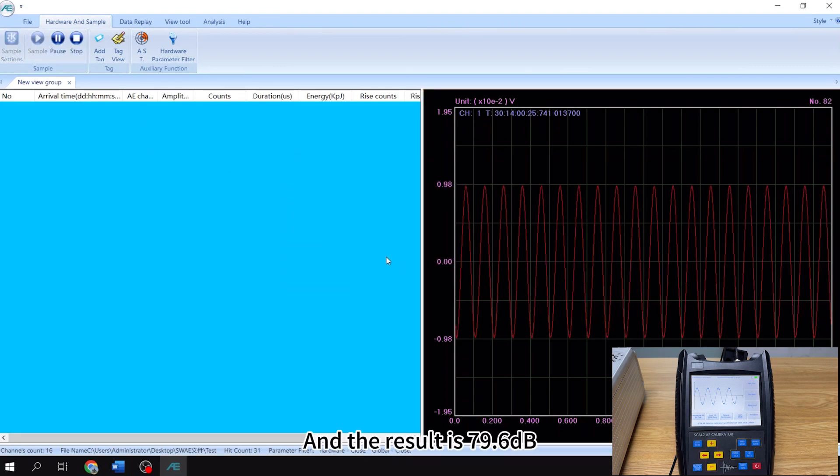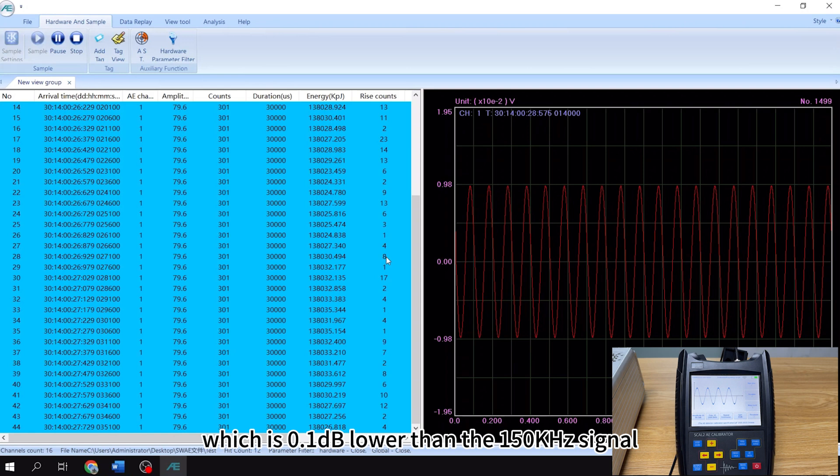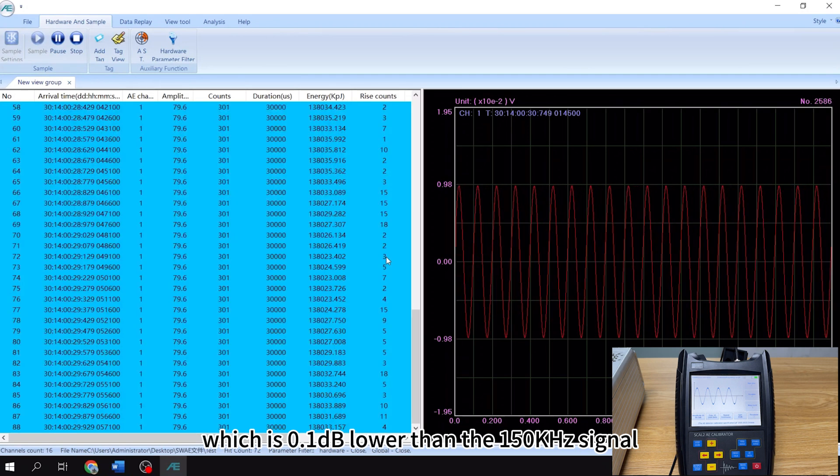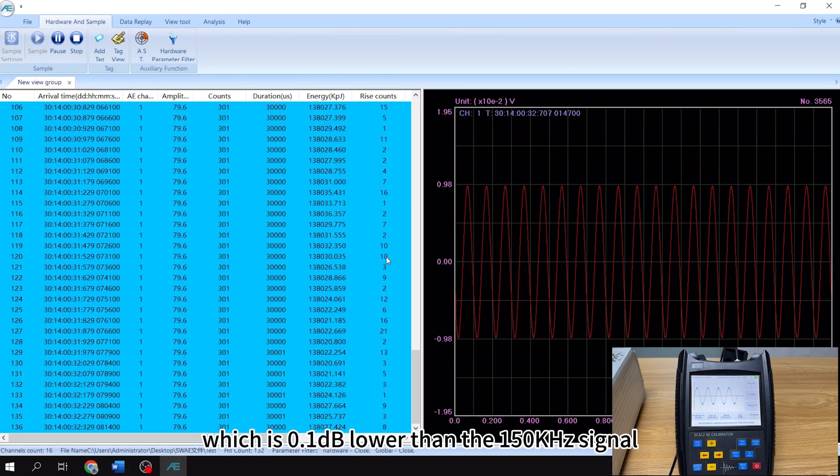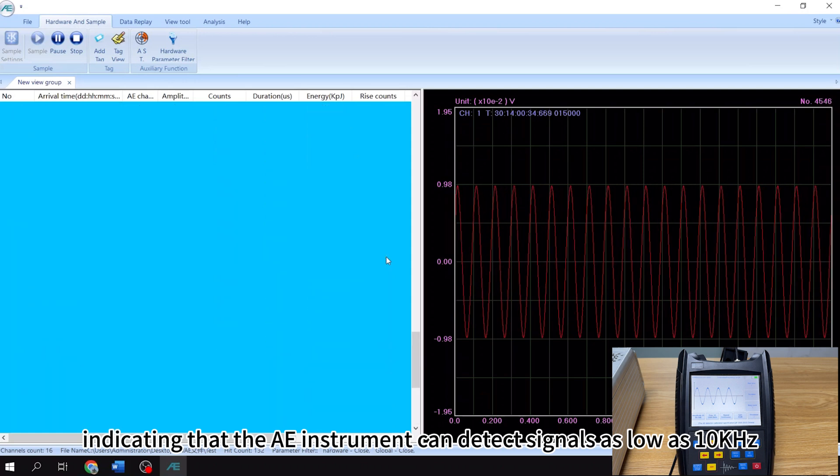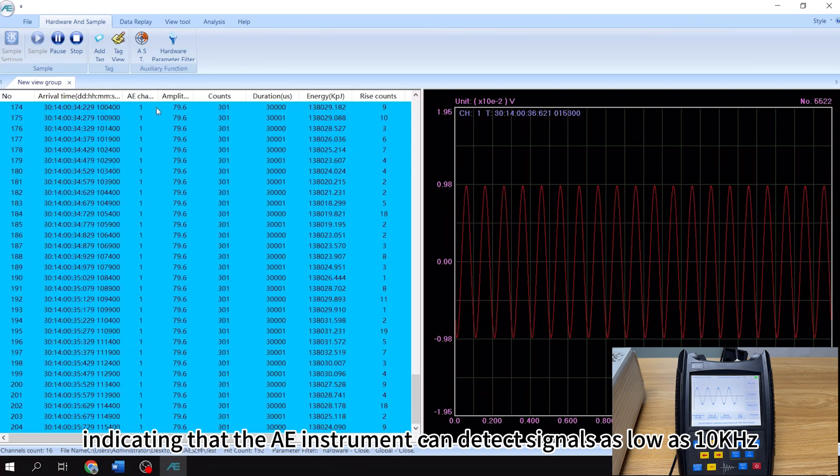And the result is 79.2 dB, which is lower than the 150 kHz signal, indicating that the AE instrument can detect signals as low as 10 kHz.